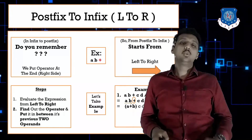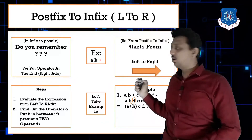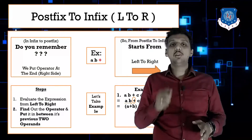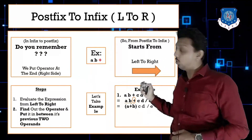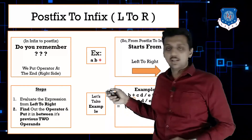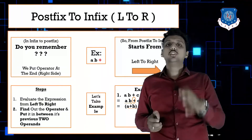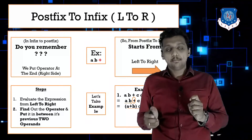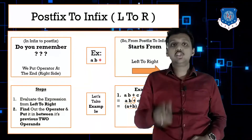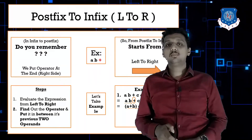Now (a+b) is already evaluated. Continue traversing left to right and we get: (a+b), c, d, division. I found division as the operator, so put division between its previous two operands: c and d. That gives us (c/d).